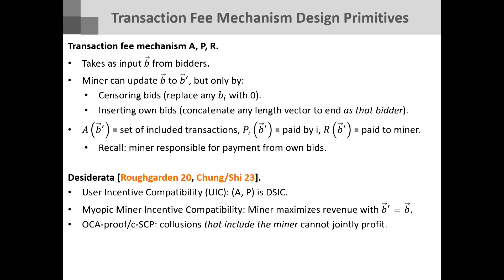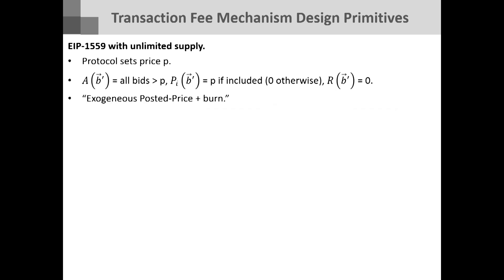So what are the previous primitives? Three things were highlighted: one, it should be dominant strategy incentive compatible for users — they should want to submit their true values; two, the miner should not want to engage in any of these manipulations — once bids are fixed, the best thing is not to censor or insert fake bids; and three, coalitions including the miner should not be able to jointly profit. Those are the primitives, and I have two interesting case studies to walk through.